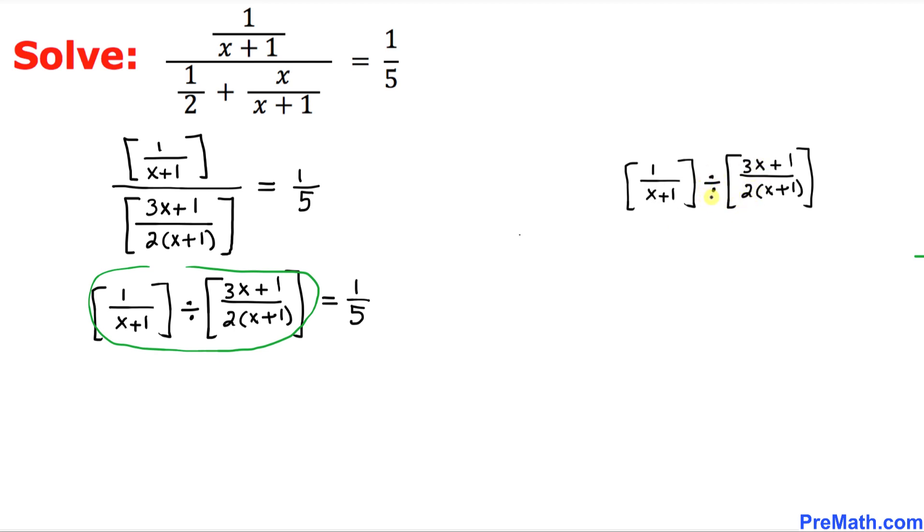So on the left-hand side, this is 1 over x plus 1, and I am going to convert this divided by sign into multiplication, and I am going to flip it over. So that's going to become 2 times x plus 1 divided by 3x plus 1. Now, the next thing we are going to do is, this x plus 1 cancels out this x plus 1.